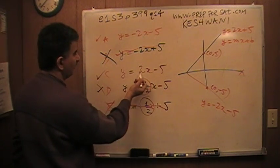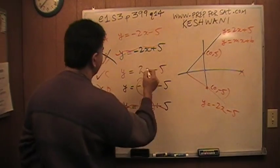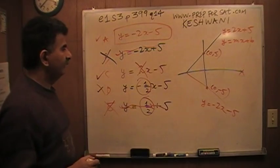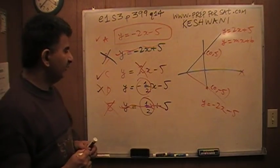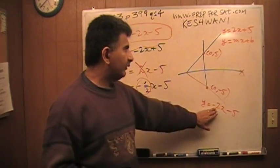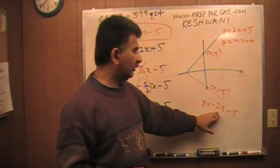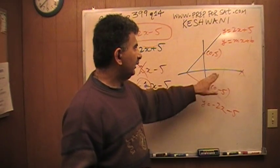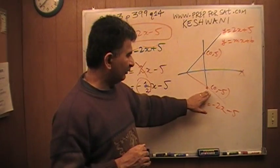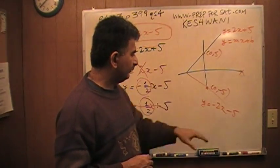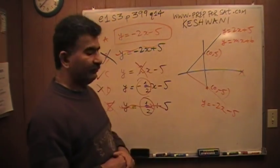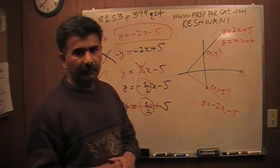This is the answer. Answer is A. There are two things we need: a slope of negative 2 because the original line has a positive 2 slope, and the original line goes through (0, 5), so the mirror image along the x-axis has to go through (0, -5). Therefore when x is 0, y has to be negative 5.